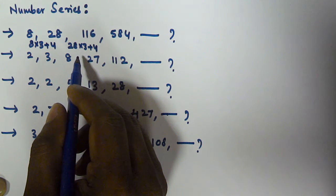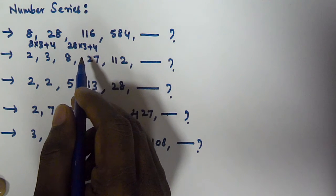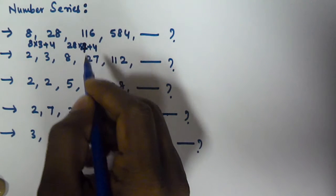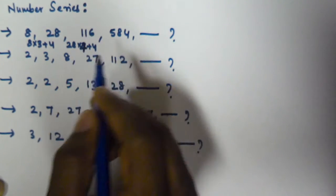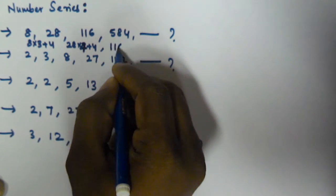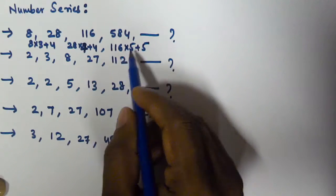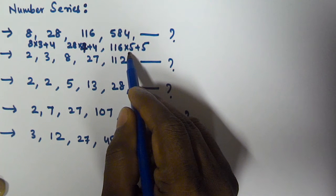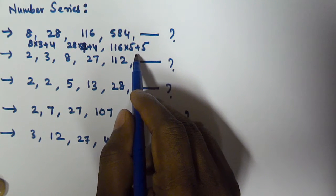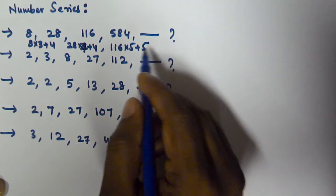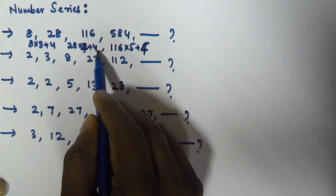So 28 times 4 is 112, and 112 plus 4 is 116. Next, 116 times 5 plus 4: 100 times 5 is 500, and 16 times 5 is 80, giving 580 plus 4 equals 584. The pattern is: multiply by 3 and add 4, multiply by 4 and add 4, multiply by 5 and add 4.